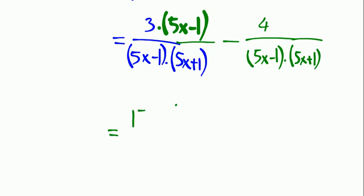I distribute 3 into the parentheses: 3 times 5x is 15x, 3 times minus 1 is minus 3. So 15x minus 3 over 5x minus 1 times 5x plus 1.